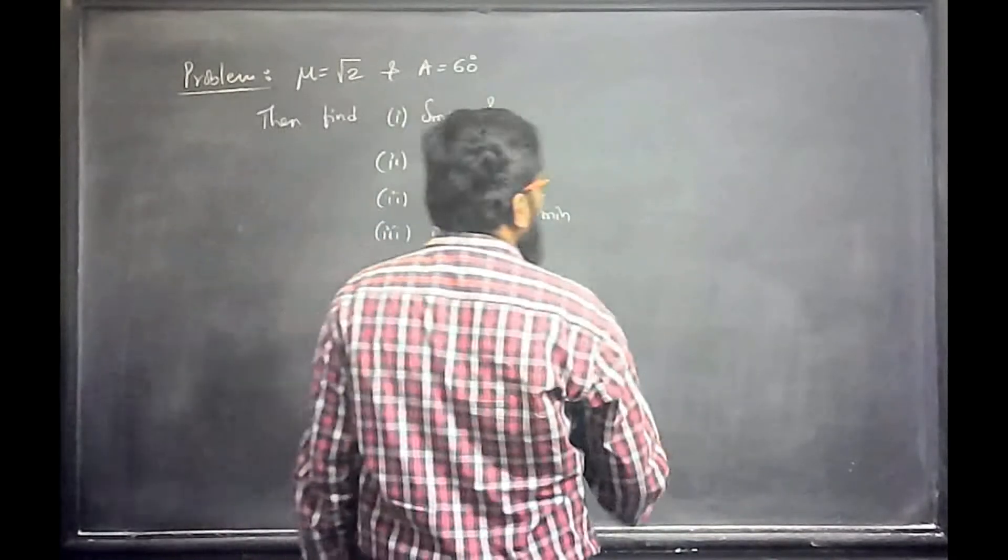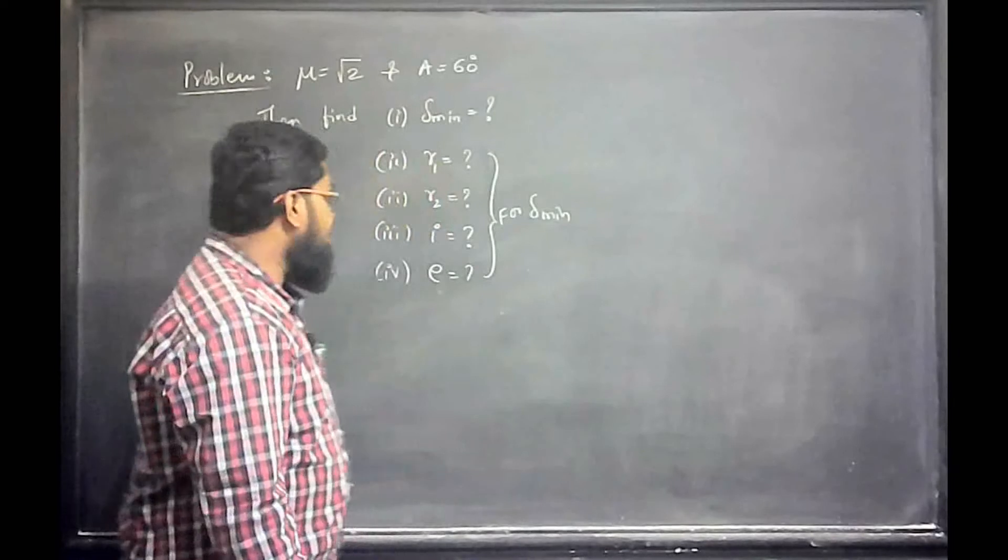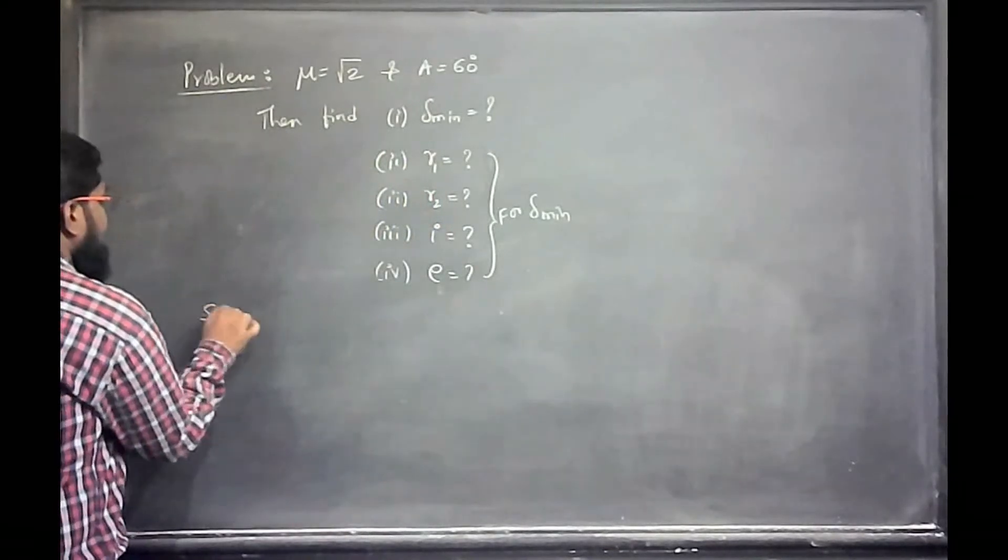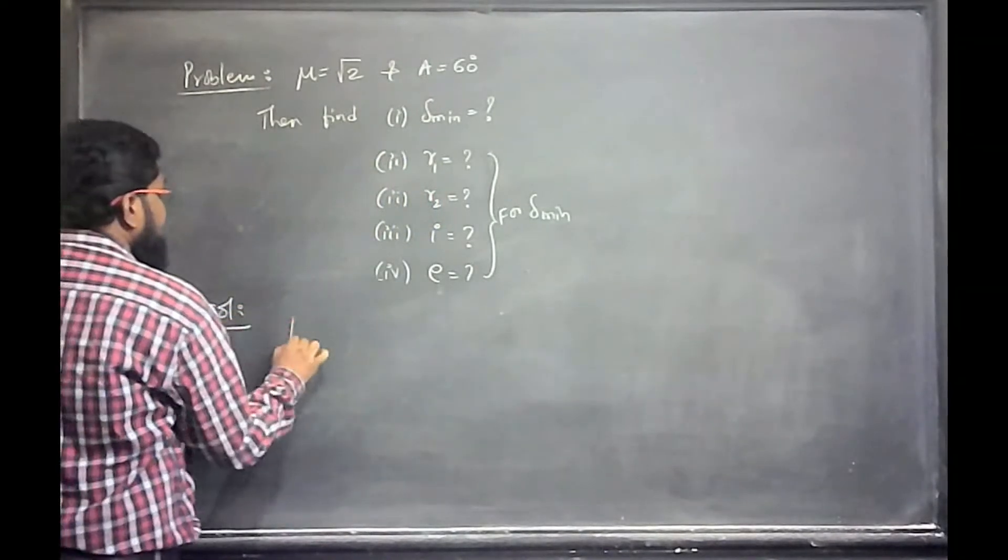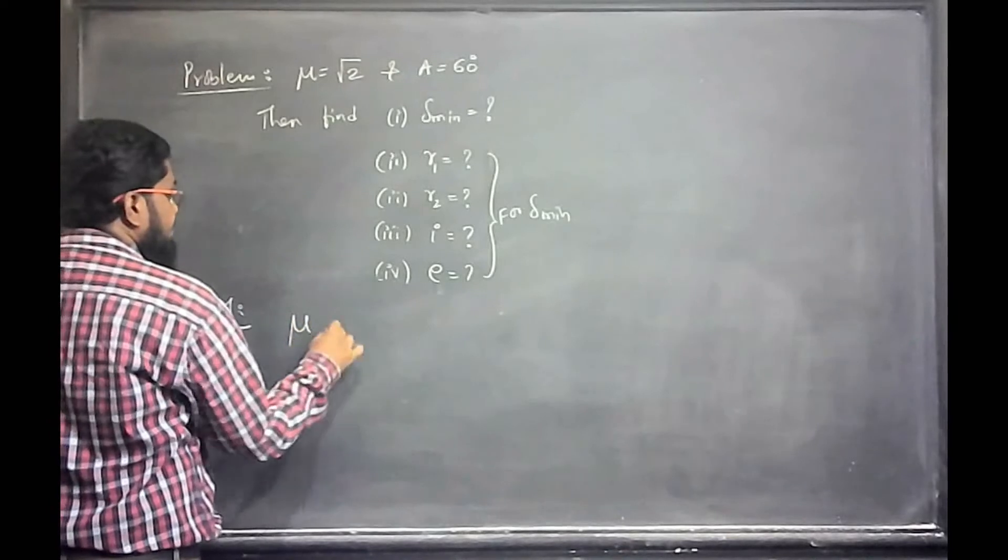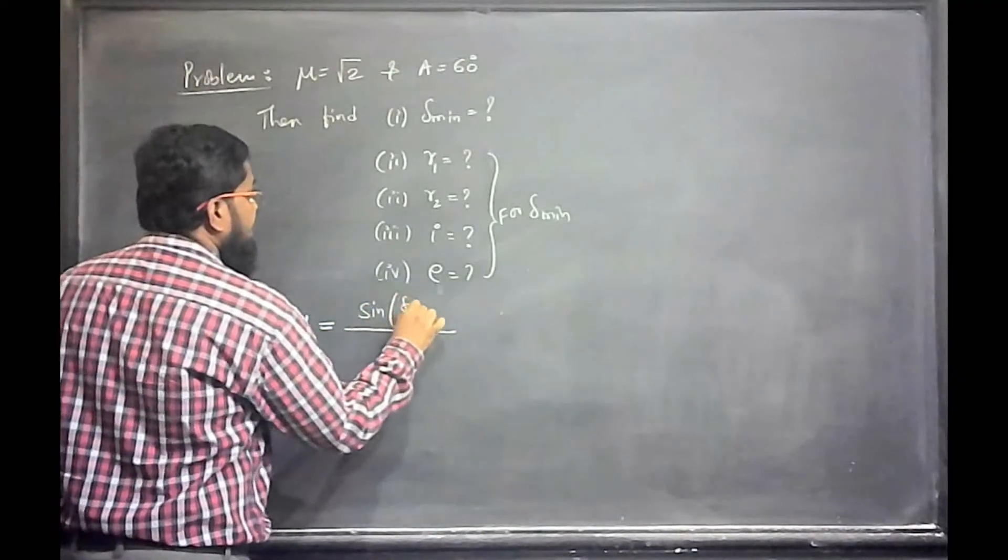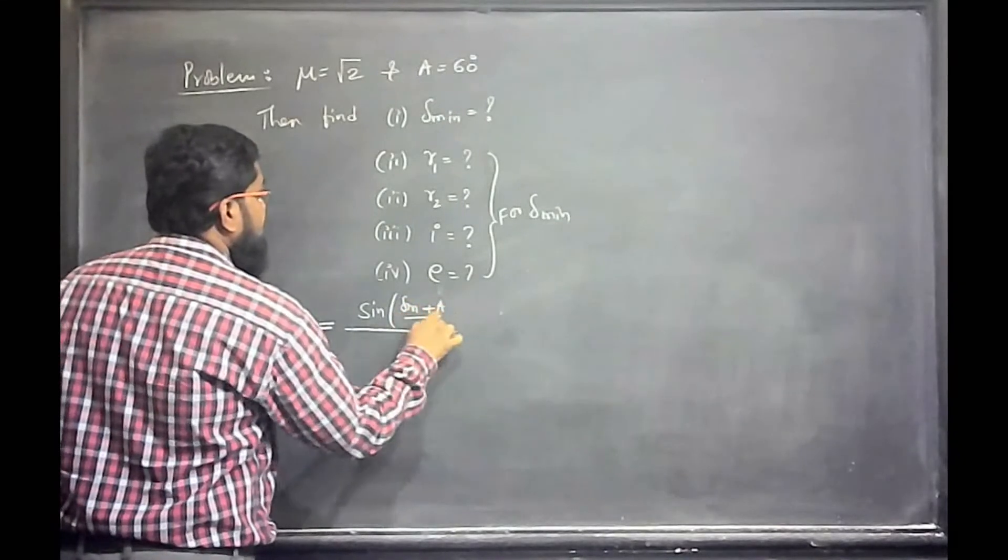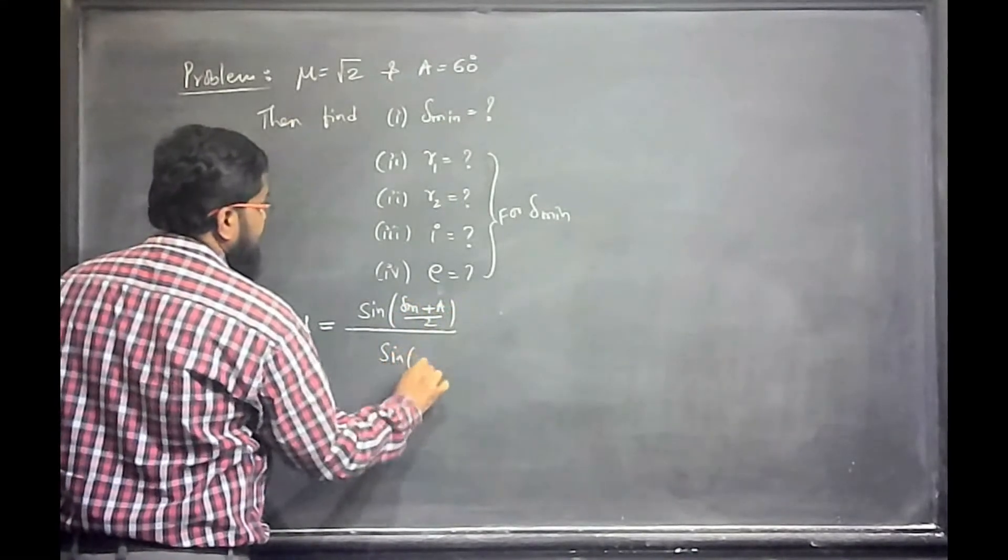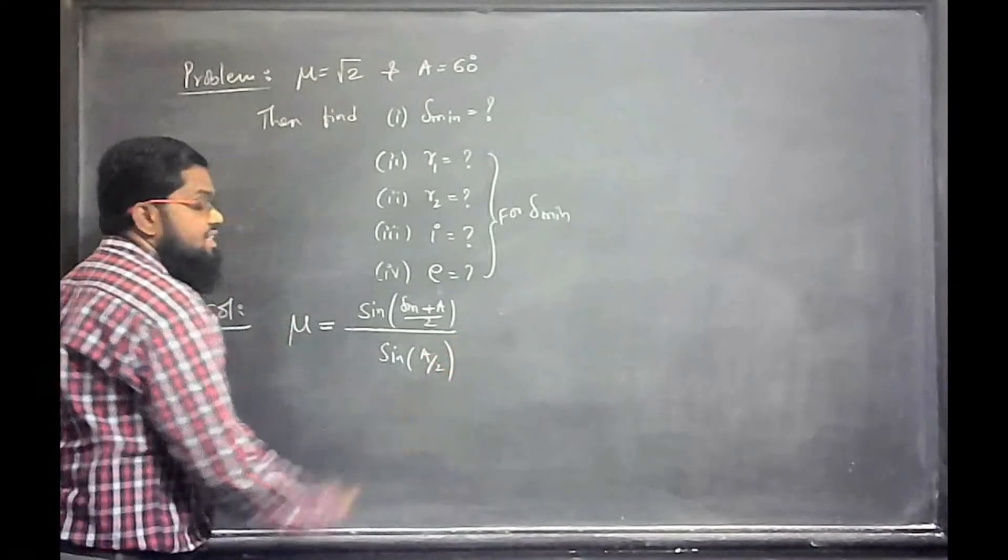What is that ready-made formula? The formula we have: μ is equal to refractive index of the prism with respect to surroundings. The formula is sin((δm + A)/2) divided by sin(A/2). This is the final derivation formula.